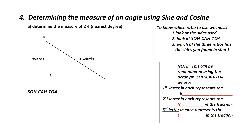Number four: determining the measure of an angle using sine and cosine. Determine the measure of angle A to the nearest degree. I look at my steps — the first thing I need to know is what sides I'm working with. 16 is the side across from the right angle, so it is my hypotenuse. 8 is beside angle A, which makes it my adjacent. Now, how do I know which ratio to use?